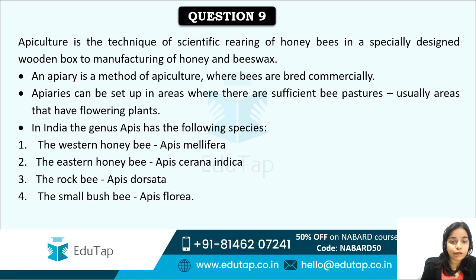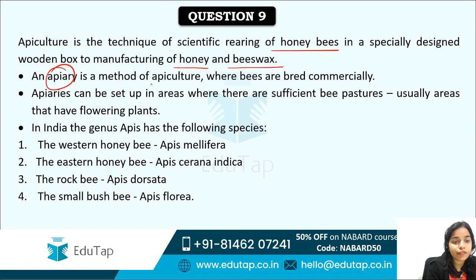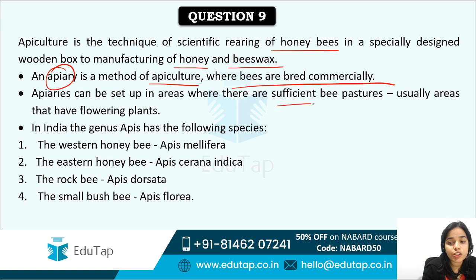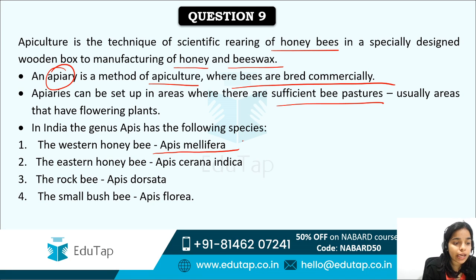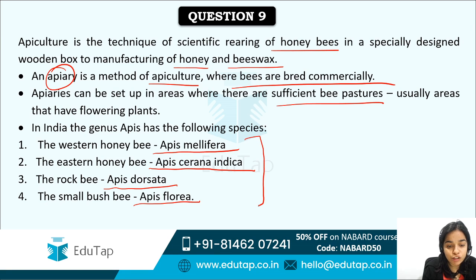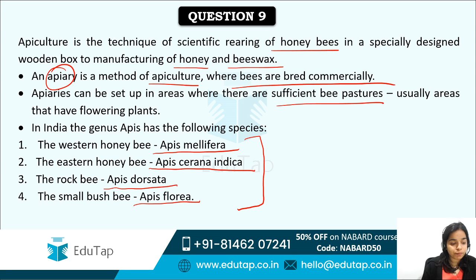Apiculture is the scientific rearing of honey bees in specially designed wooden boxes for manufacturing honey and beeswax. An apiary is where bees are bred commercially. In India the following bee species are found: Western honey bee (Apis mellifera), Eastern honey bee (Apis cerana indica), Rock bee (Apis dorsata), and Small bush bee (Apis florea).